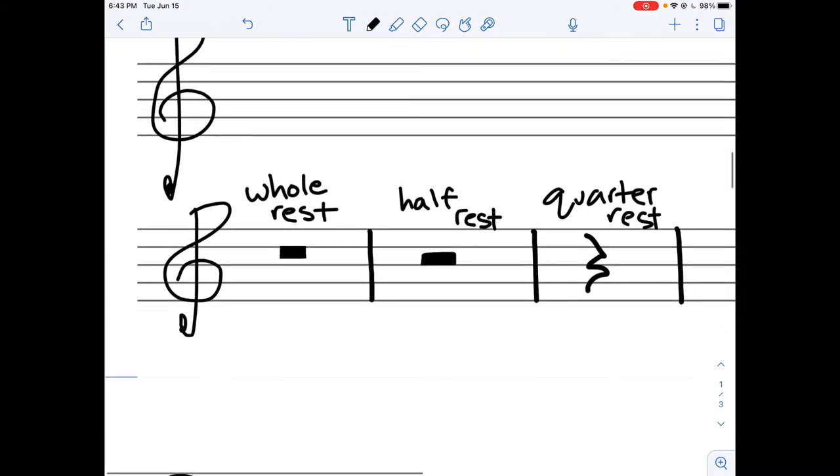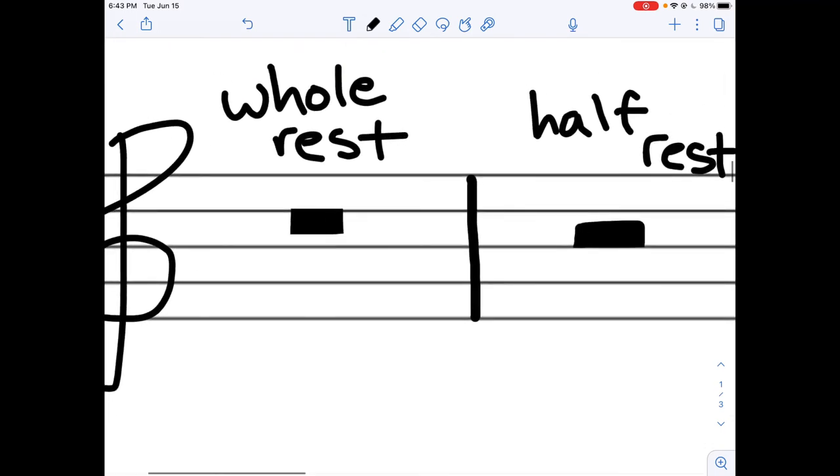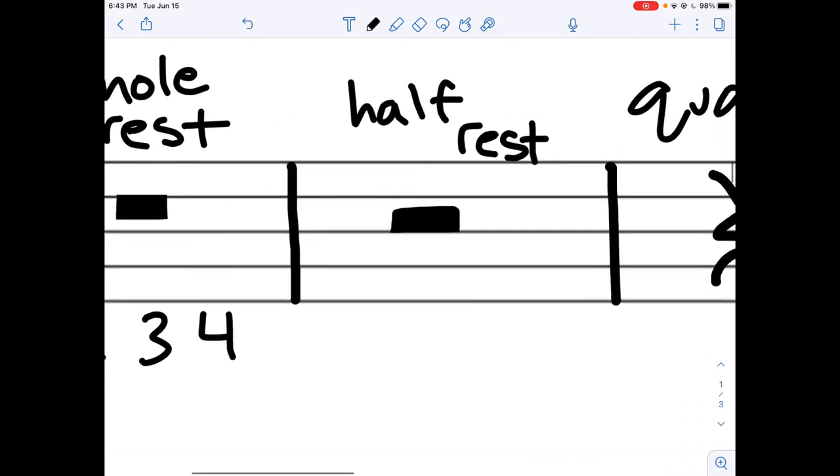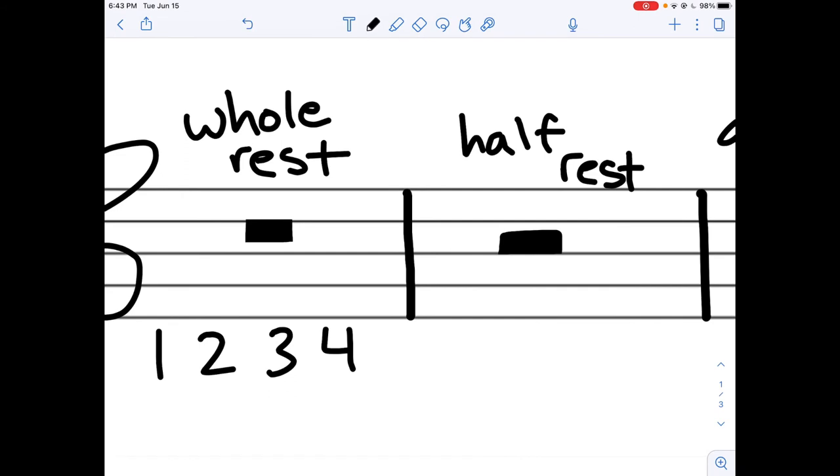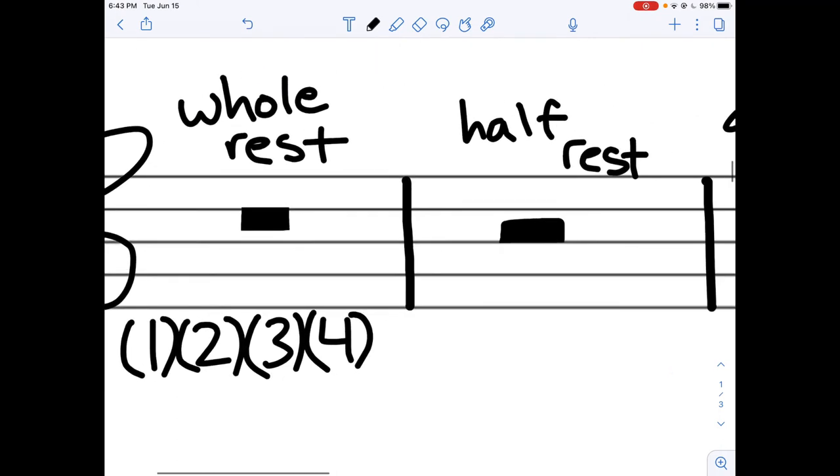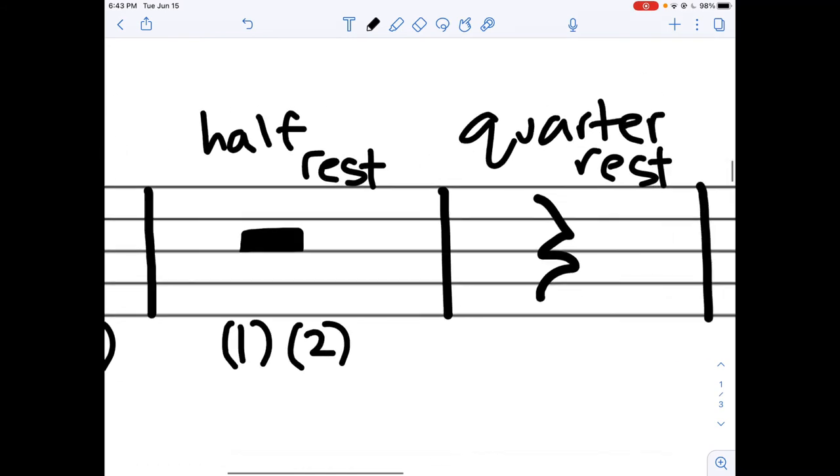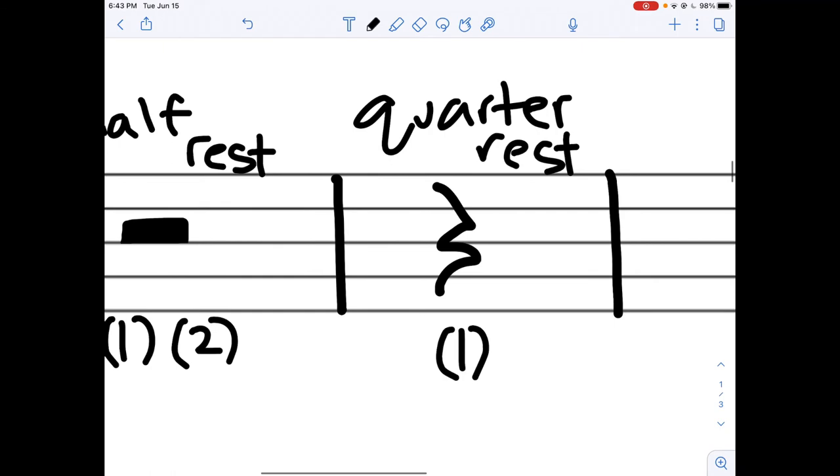Can we guess how many beats the whole rest is? Well, it's just four beats. So one, two, three, four. And usually, when we're writing counts of rests, we should put in parentheses for each note because there's no sound during that time so that you won't get confused. So you just write this as one, two, and this is just one.